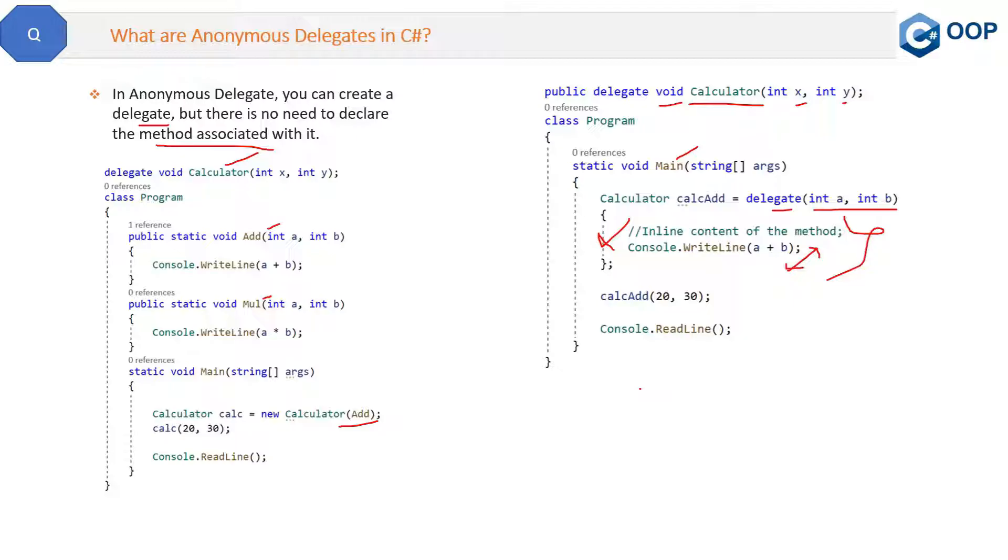So the conclusion is, unlike a normal delegate where there is a method like add or multiply, in the anonymous delegate there is no such method. All the logic is written inline, and that is what we call an anonymous method.